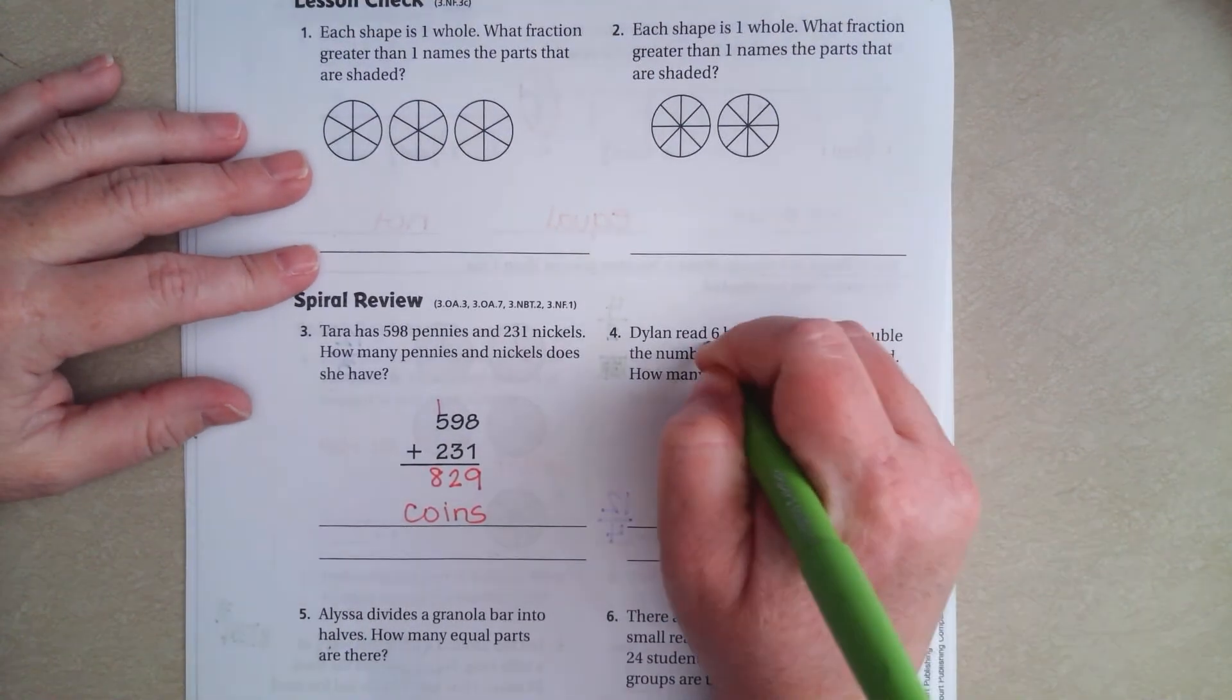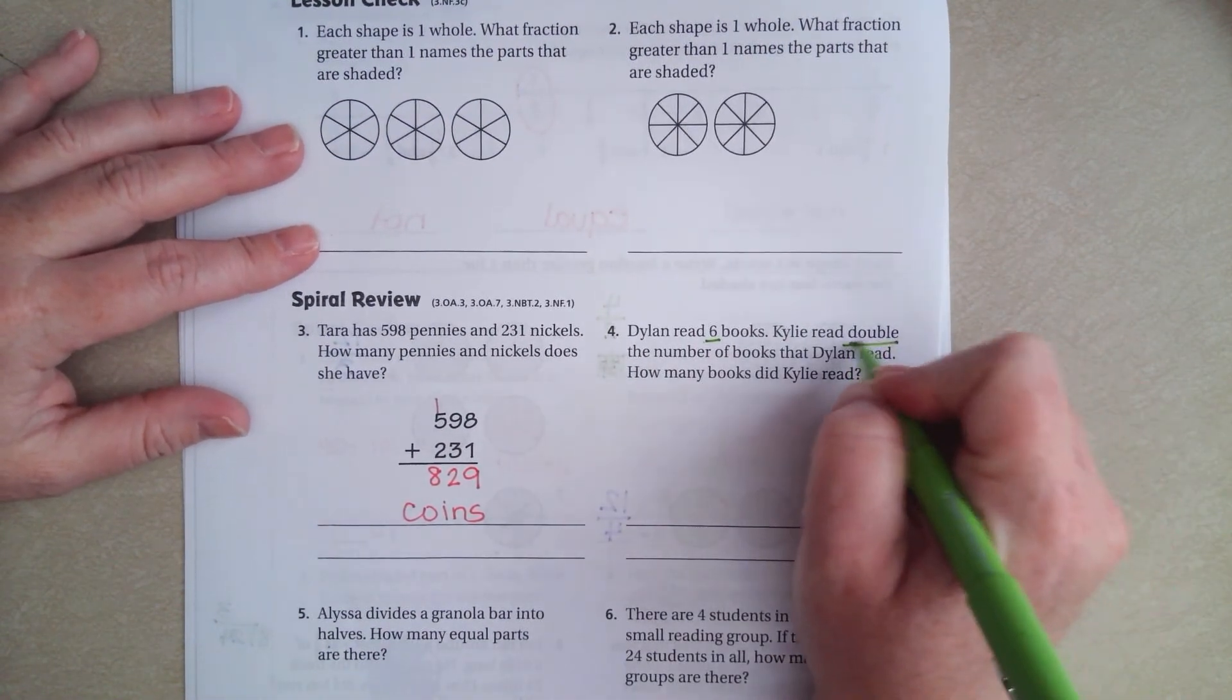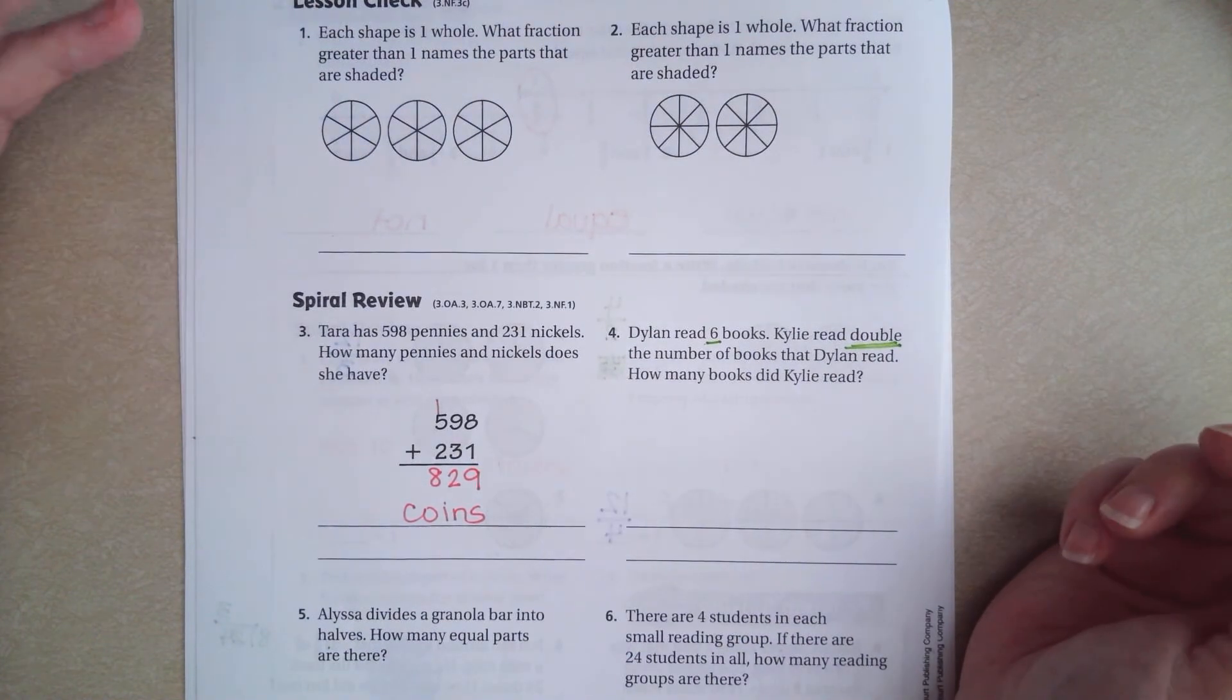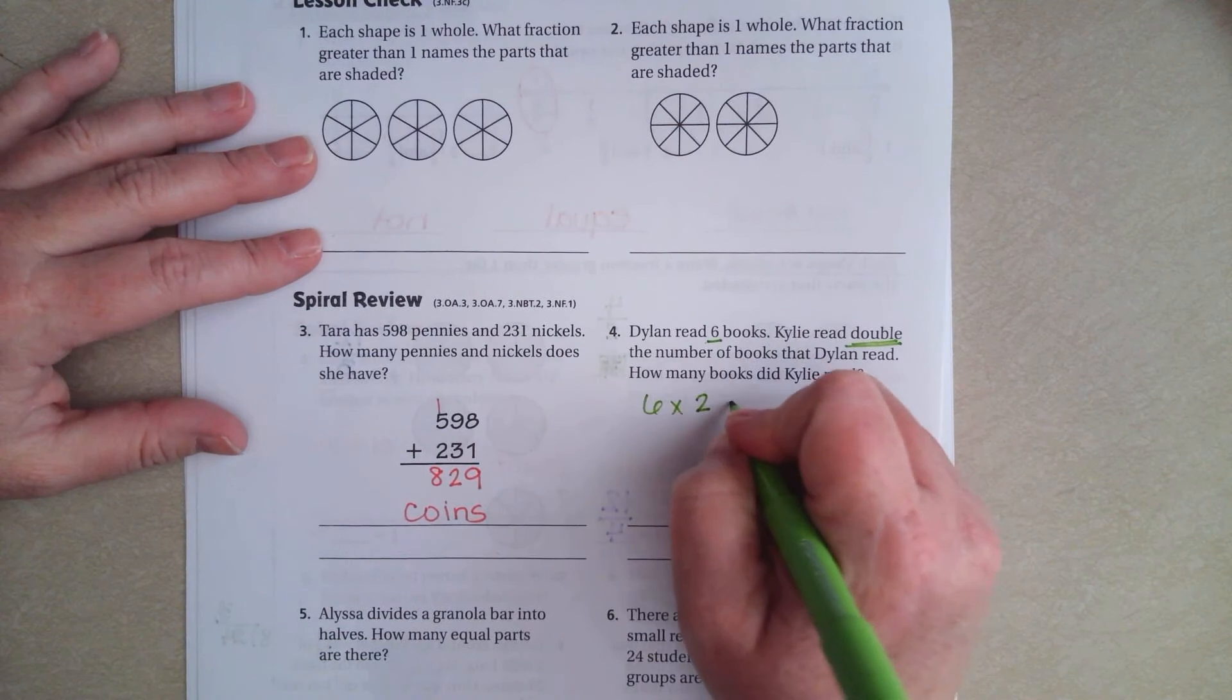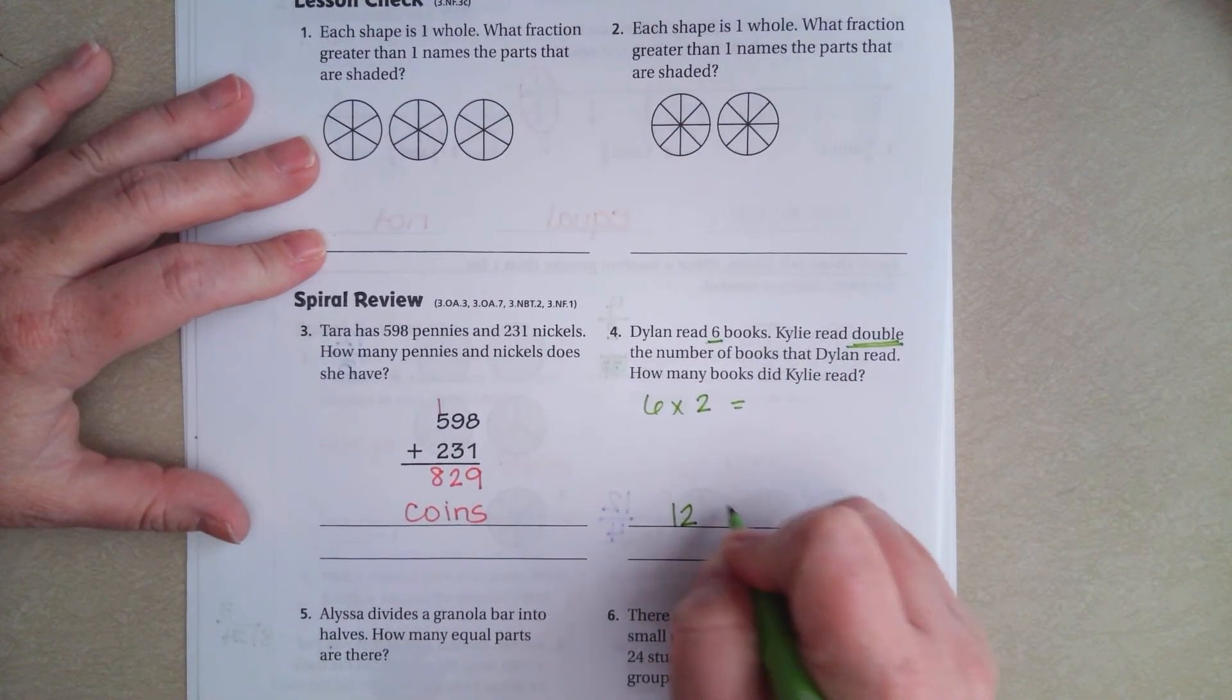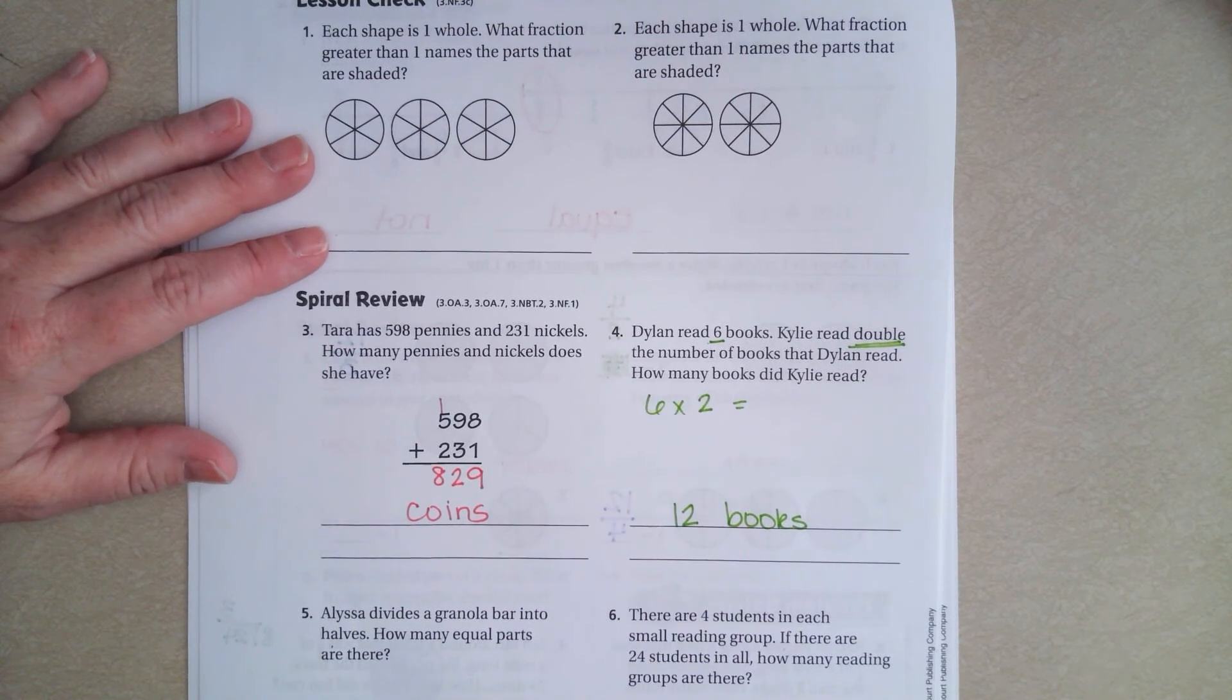Dylan read 6 books. Kylie read double the number of books that Dylan read. So 6, and when you double something, you multiply it by 2. Well, 6 times 2 is 12 books. Make sure we're labeling, guys.